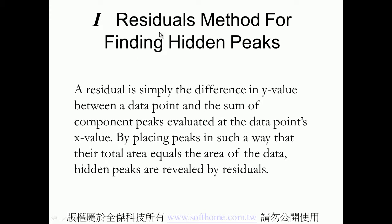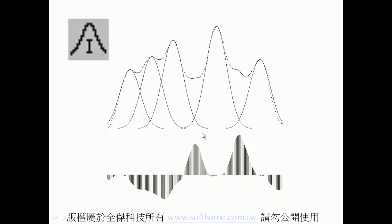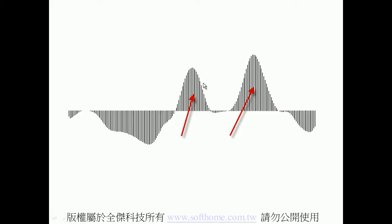The first method is the residual method. When we extract the major peak, what is left is the residual. In the upper plot, you can see the five major peaks. And in the lower plot, you can find the residual plot, which still has two peaks inside. These are hidden peaks.